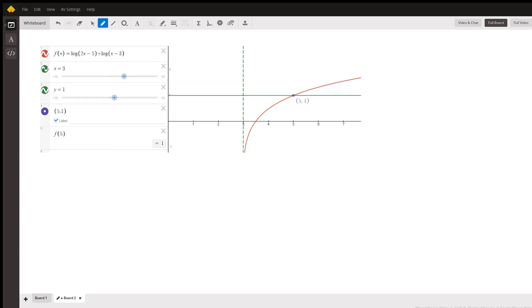I go to board 2 and actually graph this logarithmic function. x equals 3 is a vertical asymptote. Notice that the graph of the function is all to the right of that vertical asymptote. And when y equals 1, when the function is equal to 1, the x value is 5. And this confirms that f of 5 does indeed equal 1.